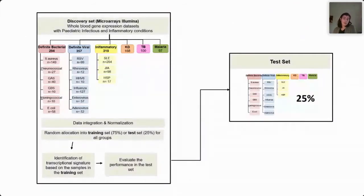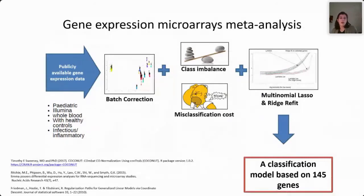I'll show you some very recent data. We used publicly available gene expression data, and patients were categorized into six groups: definite bacterial, definite viral, inflammatory, Kawasaki disease, TB, and malaria. We split the data into training and test sets, corrected for batch effects, fit a model, and identified 145 genes as the basis of a classification algorithm to classify patients into causes of fever.